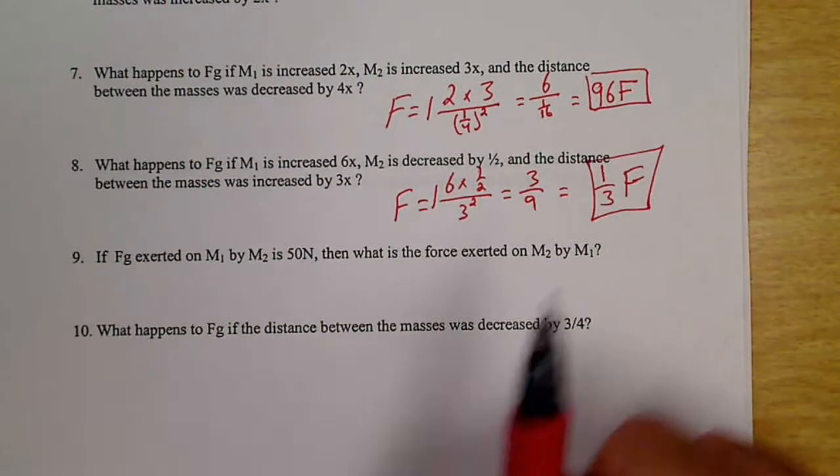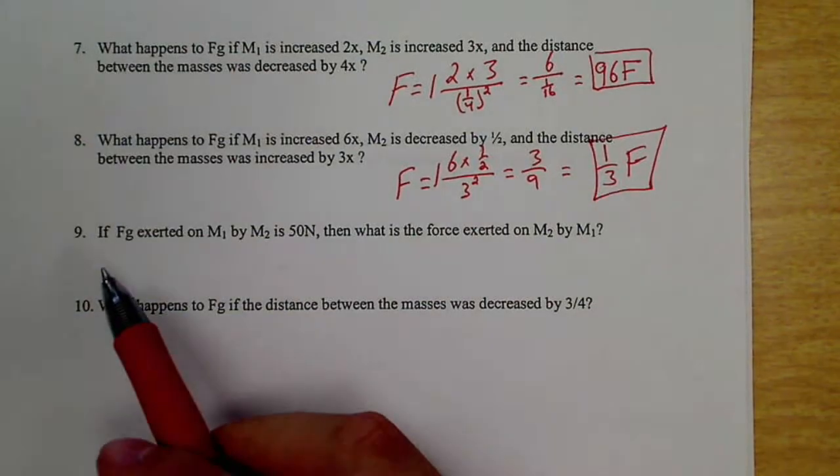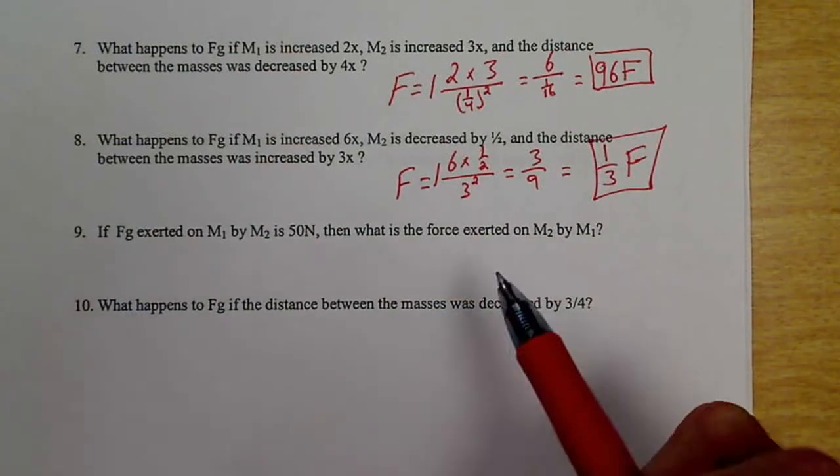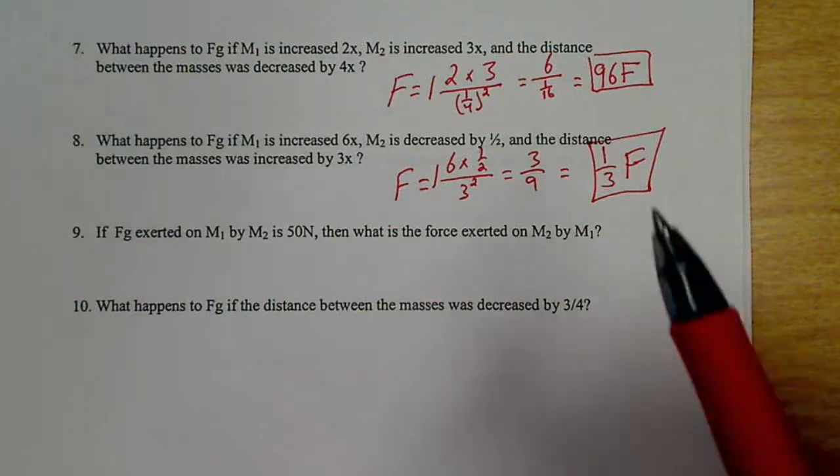Nine looks tricky. If a force is exerted on M1 by M2 is 50, then what is the force exerted on M2 by M1? For this one, look up Newton's third law.